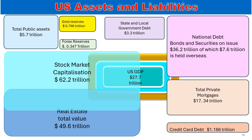In the center, the Econograph displays the GDP shape, with the rotating four-way representing the circular flow of the economy. On the left-hand side, in turquoise, the largest asset of $62.2 trillion is the combined stock market capitalizations. These overlap the blue total property assets of $49.6 trillion, displayed in turquoise. Above this, the public sector assets are situated, showing total public assets of $5.7 trillion, including gold and foreign exchange. The national debt, or total bonds and securities on issue, of $36.2 trillion — of which $7.6 trillion represents overseas owners — is displayed in pink on the right-hand side. On the lower right-hand side, private mortgages of $17.3 trillion are displayed in beige, with credit card debt of $1.166 trillion underneath in the corner.